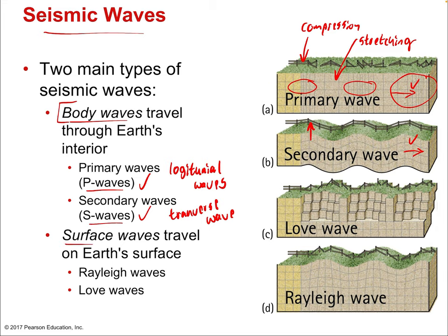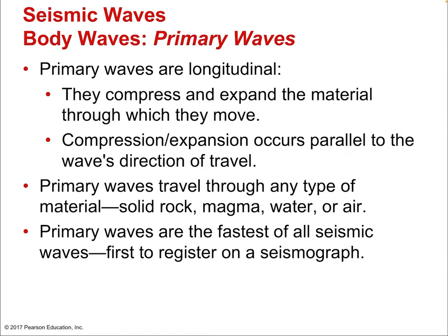There are also surface waves — rally waves and love waves. Rally waves have an up-and-down motion, and love waves move side to side. These are really the manifestation of the earthquake itself — the shaking that causes damage. Primary waves compress and expand the material through which they move, parallel to the wave's direction. Primary waves travel through any type of material — solid rock, magma, water, or air — because they are longitudinal, just like sound waves, which also travel well through fluids and solids.